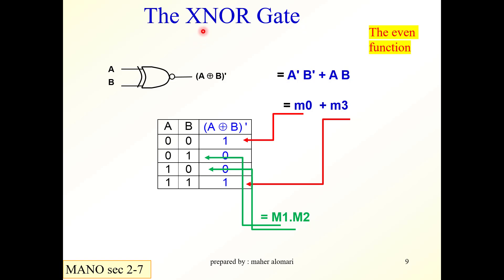There is a gate called the exclusive NOR. The exclusive NOR is the complement of the exclusive OR — it is an exclusive OR gate followed by an inverter. Its output is equal to A bar AND B bar, OR'd with A AND B.